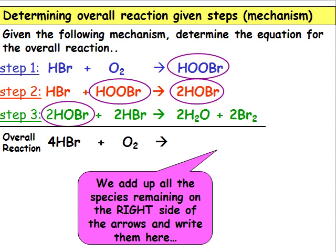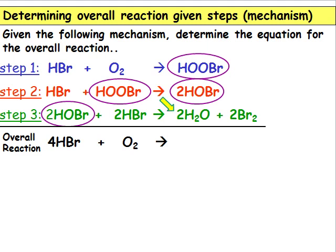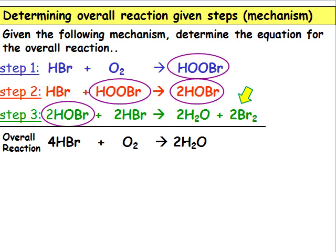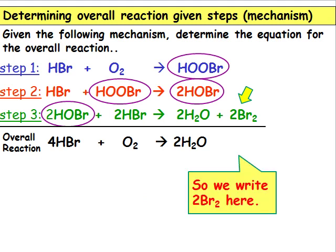Now we add up all the species remaining on the right side of the arrows and write them here. We have 2 molecules of H2O, so we write 2 H2O here. And we have 2 molecules of Br2, so we write 2 Br2 here.